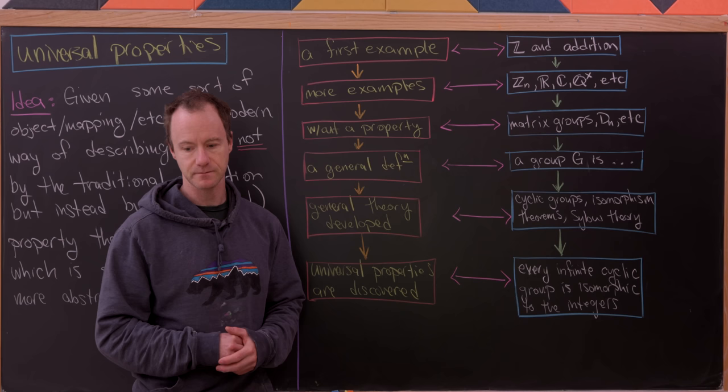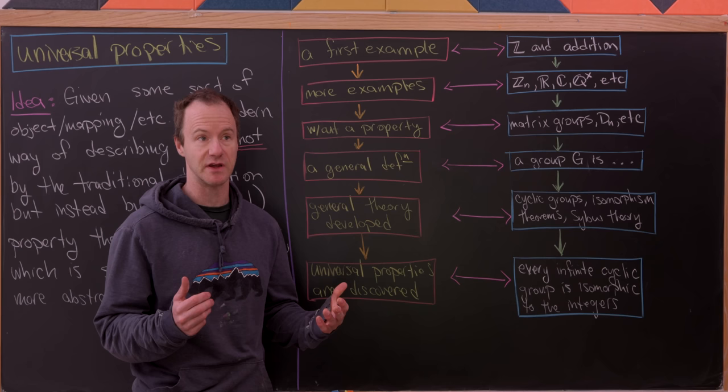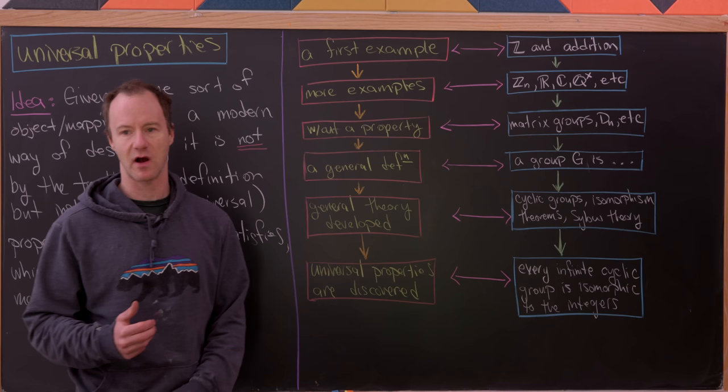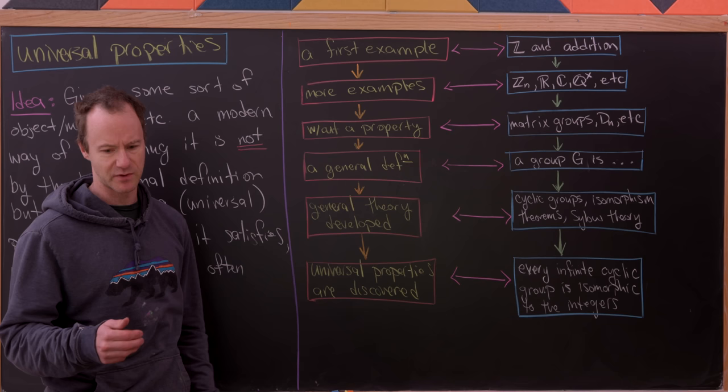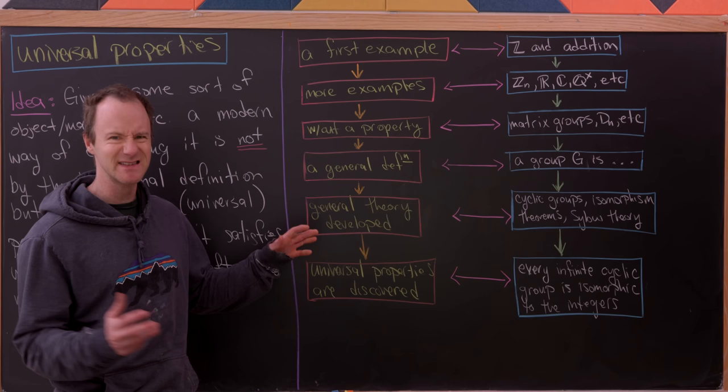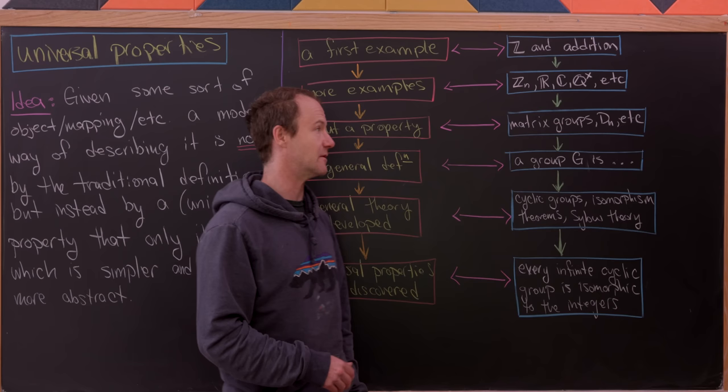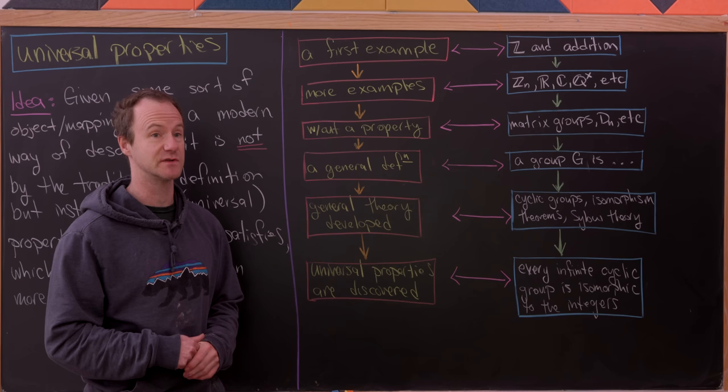You might notice that all of these objects had the commutativity property. What if we got rid of commutativity — would we maintain a nice structure still? That would be the next step: look at all your examples, drop a property, and find other nice examples. In this case you can indeed drop commutativity and find the matrix groups, dihedral groups, symmetric groups, and so on — lots of nice examples of groups that don't commute.